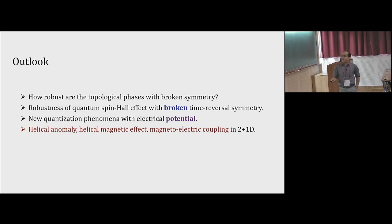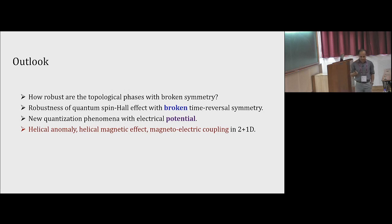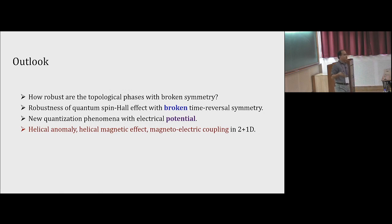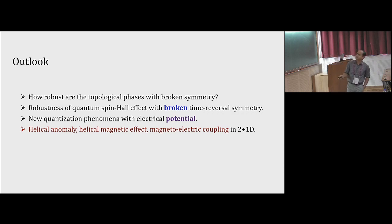Finally, we will talk about some anomalies that come out in these settings — like helical anomaly, which is similar to chiral anomaly but for the two spin states — and magneto-electric effects and so forth.